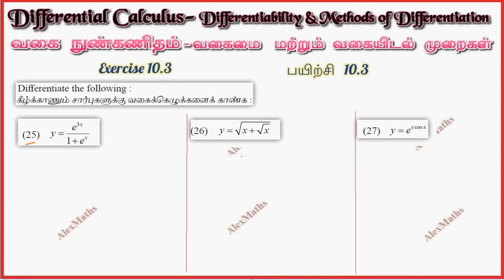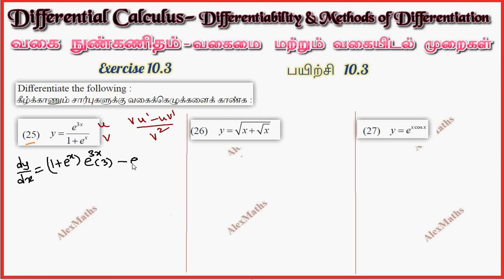If we follow u by v, so we have u and v: v·u dash minus u·v dash by v square. If we have u/v, so dy/dx equals first v, which is 1 plus e power x. Then u dash is e power 3x into 3, by the chain rule, minus u which is e power 3x as it is, times differentiation of v.